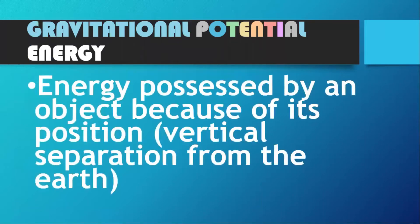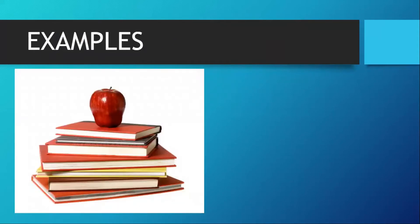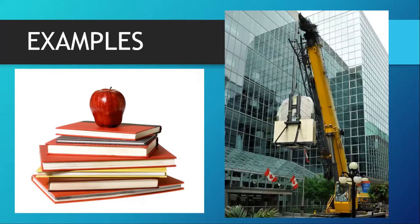Gravitational potential energy is the energy possessed by an object because of its vertical separation from the Earth. For example, an apple on top of a pile of books has been lifted to a certain height, has its mass, and is being pulled by gravity — so it has gravitational potential energy. Similarly, a tractor lifting an object gives that object mass, height, and gravitational pull, resulting in gravitational potential energy.